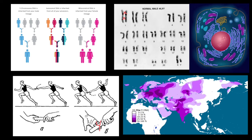Now let's talk about another haplogroup, which is based on mitochondria. Here is the human cell, and this is what we call mitochondria, which produce energy for our cells. We actually have two genomes: one is the nuclear genome, and mitochondria has its own genome, represented by a single circular chromosome. Billions of years ago, mitochondria were just bacteria which an aquatic organism acquired and used for producing energy. Some of the genes moved to the nucleus, and now mitochondria has only 37 genes.